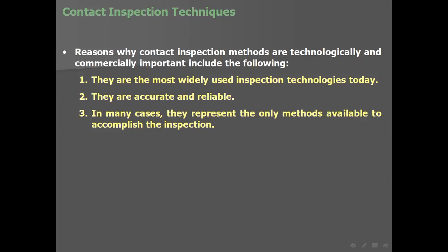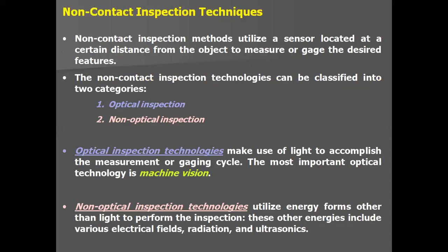Contact inspection methods are technologically and commercially important because they are the most widely used — they are accurate and reliable, and in many cases represent the only methods available. Non-contact inspection utilizes a sensor located at a certain distance from the object to measure or gauge the desired feature. Non-contact technologies are classified into two categories: optical inspection, which uses light to accomplish measurement, and non-optical inspection.